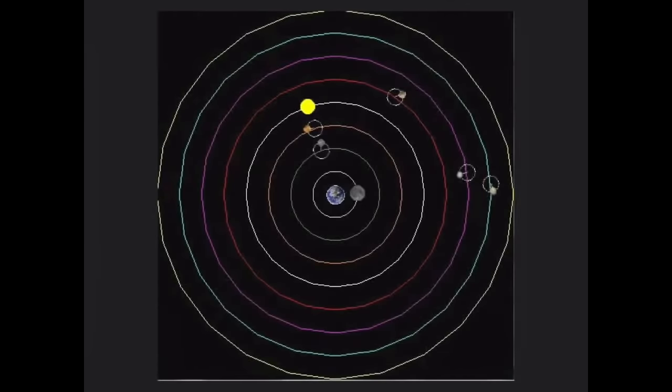Ptolemy created a very detailed model, shown here, to explain how the Earth made no motion at all, was completely still, and all of the other planets and objects in our solar system were moving around it. If you watch some of the planets that are slowly circling as they orbit the Earth, this was Ptolemy's way of explaining retrograde motion.